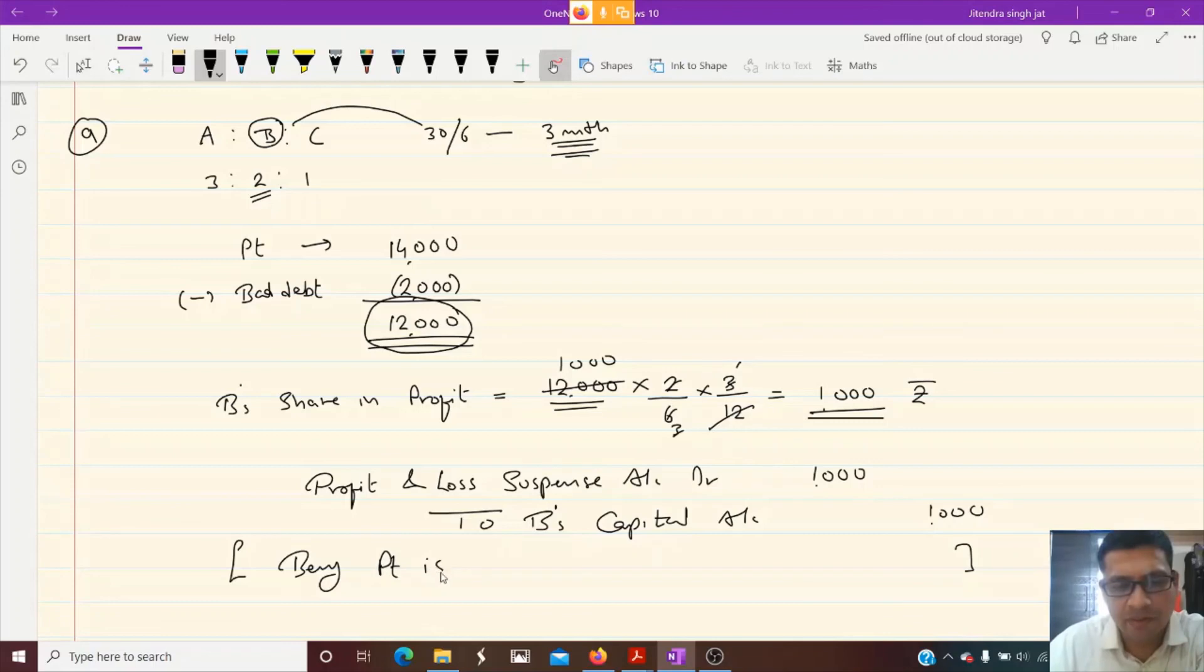Being profit is credited to B's capital account. I hope this question is clear to everyone.